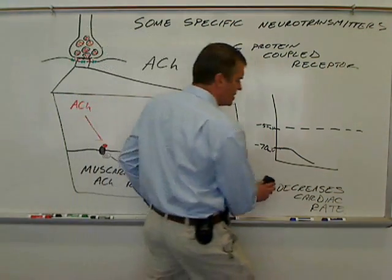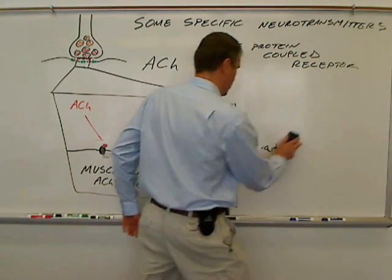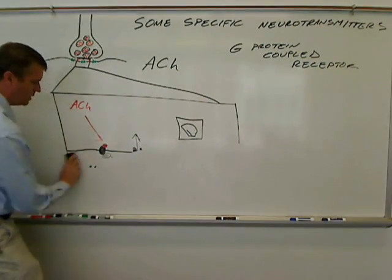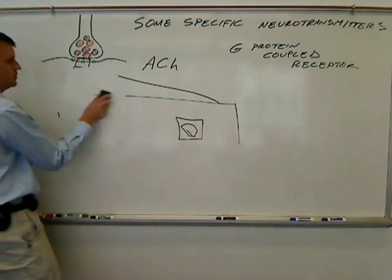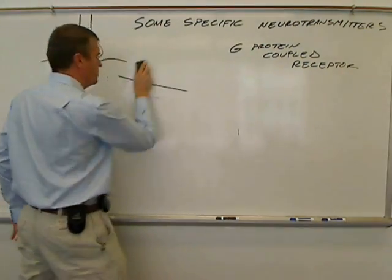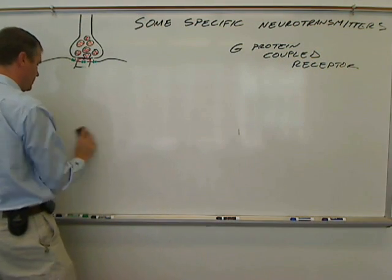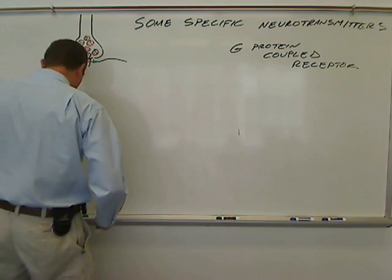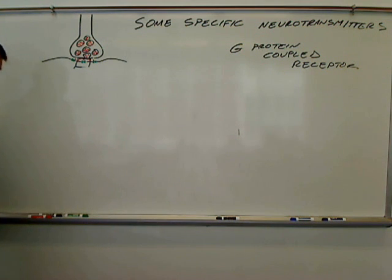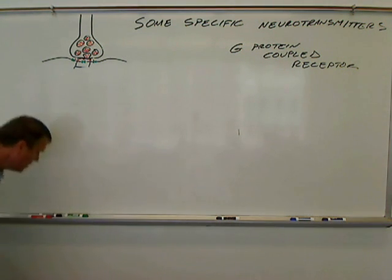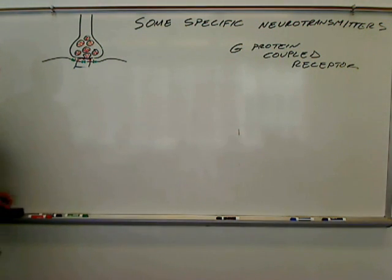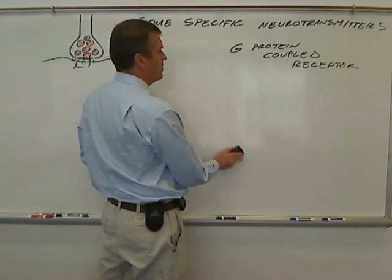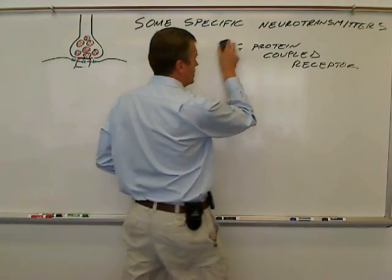So that's acetylcholine and two receptors for acetylcholine. Acetylcholine is also the neurotransmitter of muscle contraction, and it's also important in various places in the brain.